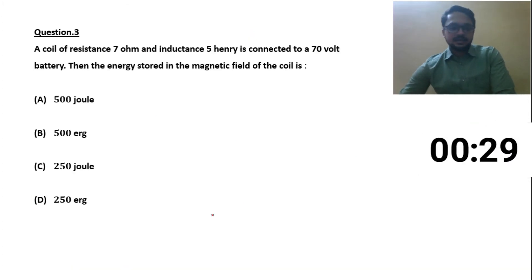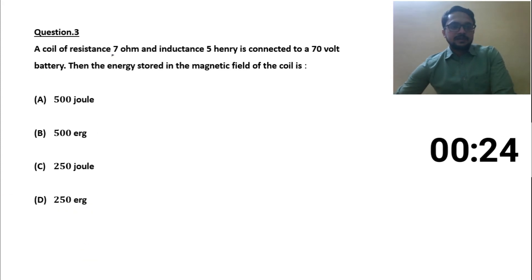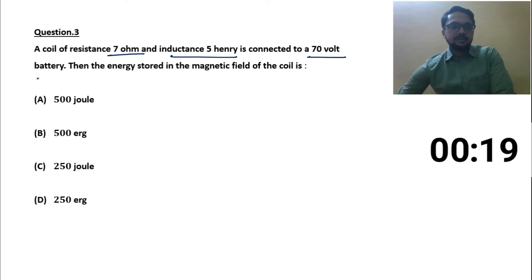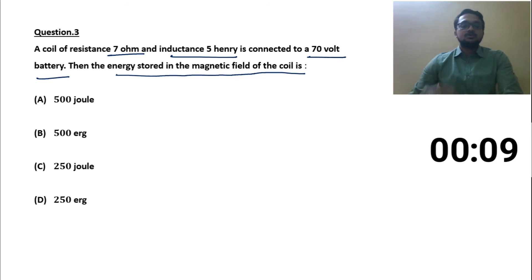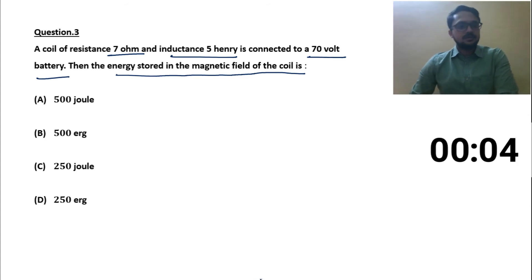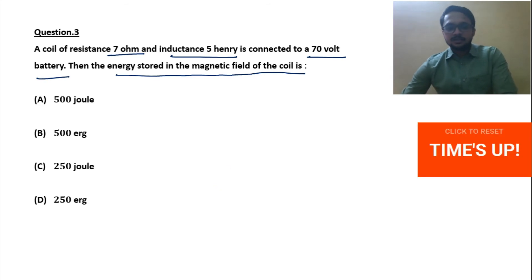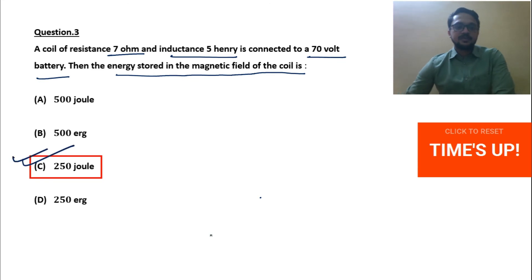Let's see the next question — question number three. Your timer has started. A coil of resistance 7 ohm and inductance 5 Henry is connected to a 70 volt battery. Find the energy stored in the magnetic field of the coil. Options: 500 Joule, 250 Joule. Time's up.